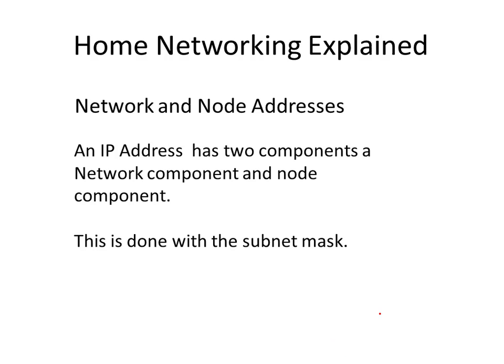An IP address has two components: a network component and a node component. This is done by using a subnet mask. It's not really important that you understand subnetting — I've covered that in another tutorial — but for the purpose of this video, you need to appreciate that the subnet mask divides the address into a network component and a node component.